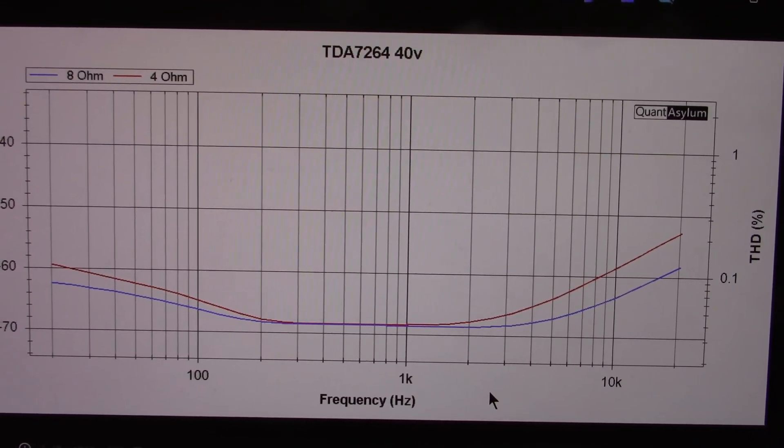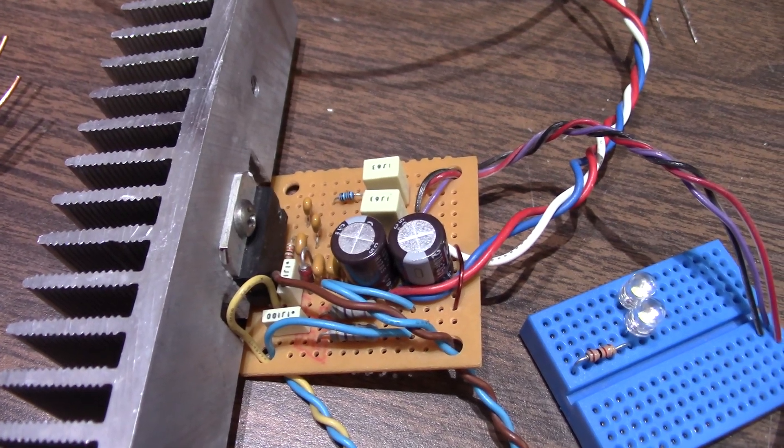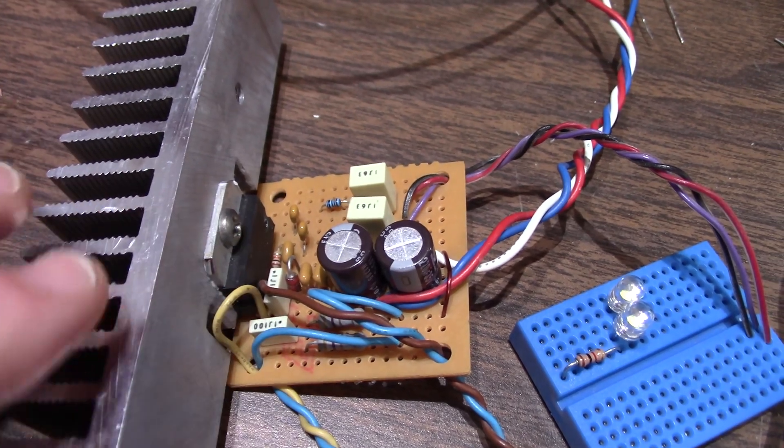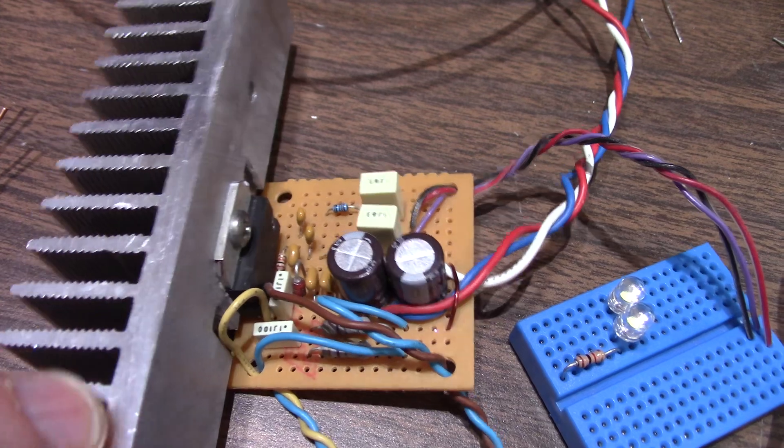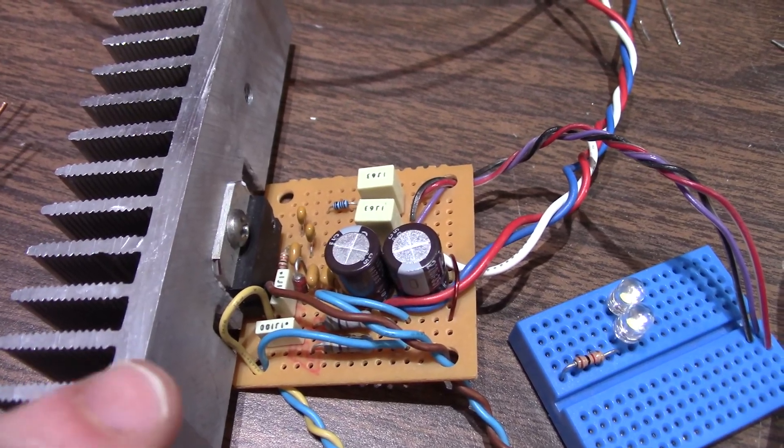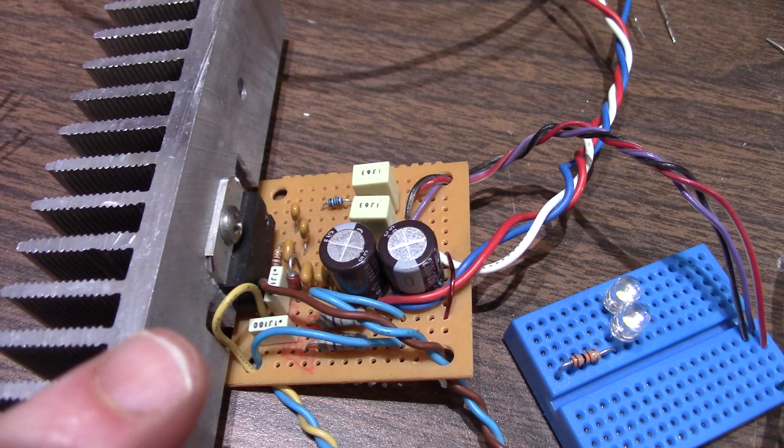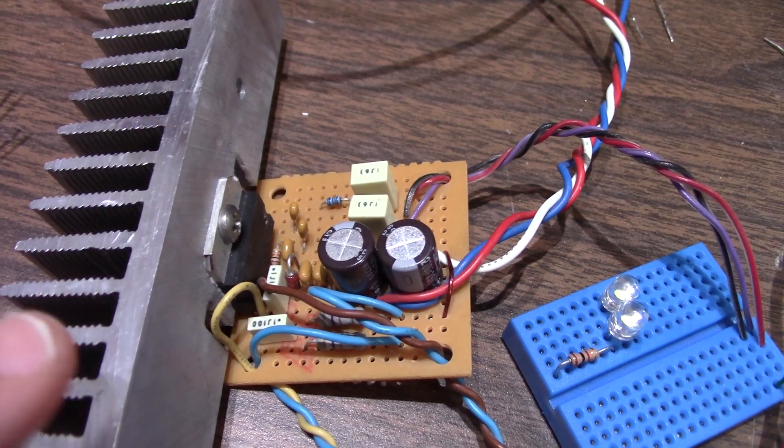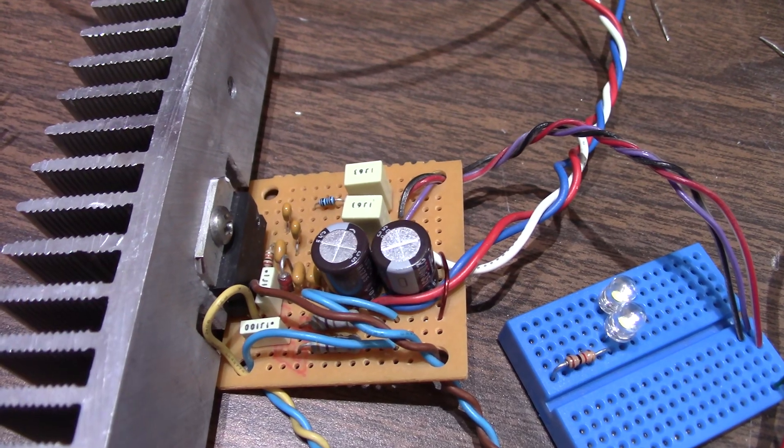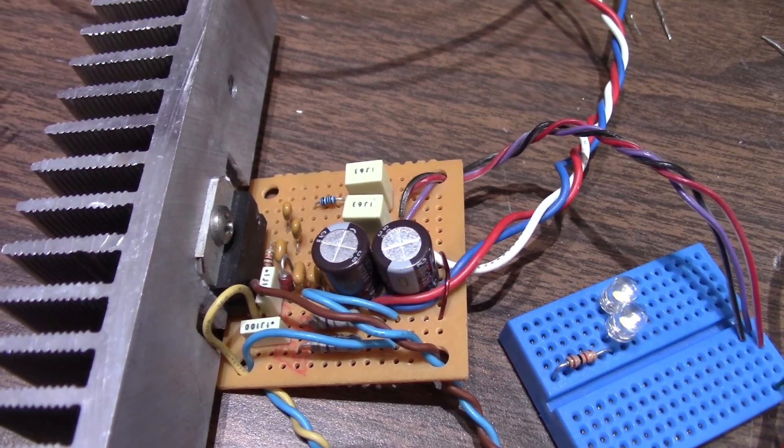So there you have it, the TDA 7264 stereo amplifier chip. Like I said, easy to use, doesn't require a lot of parts to make an amplifier. I will link in where I did my original review of this chip. This video here is more of a measurement type video, but I did a more regular review a while back on this nice chip.